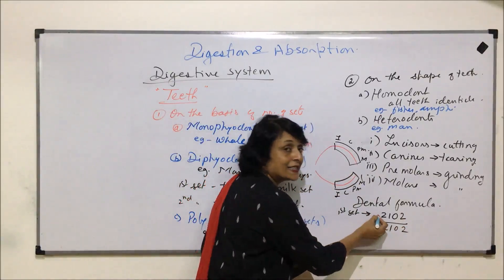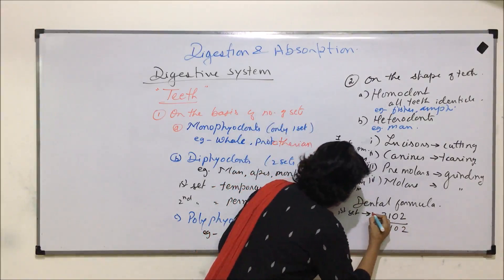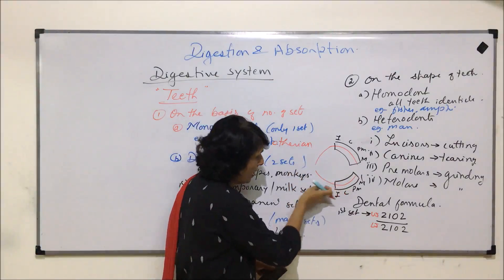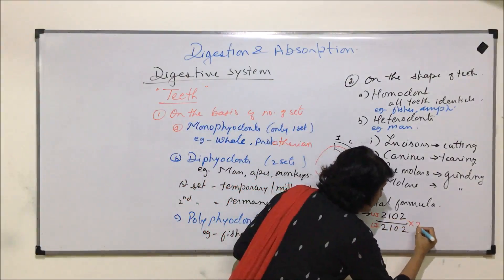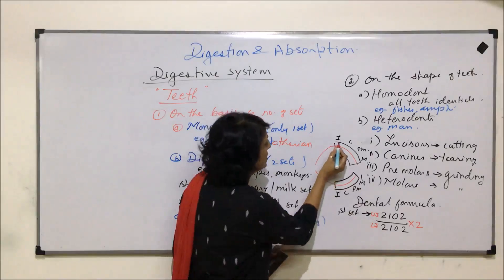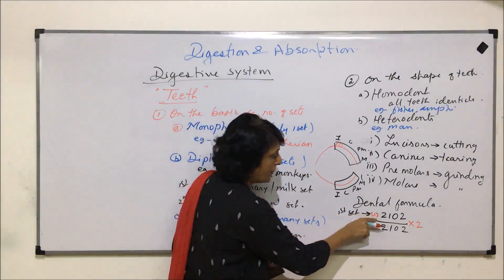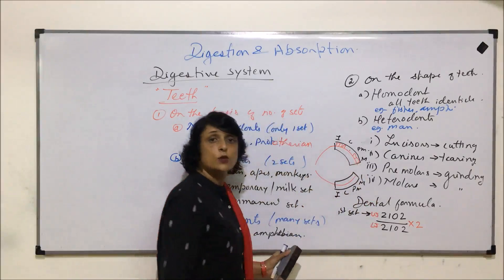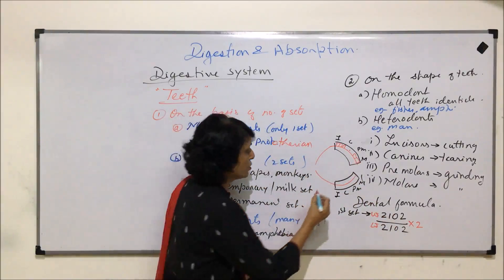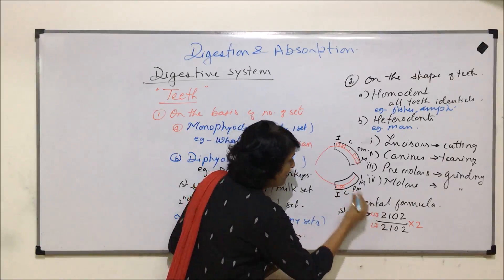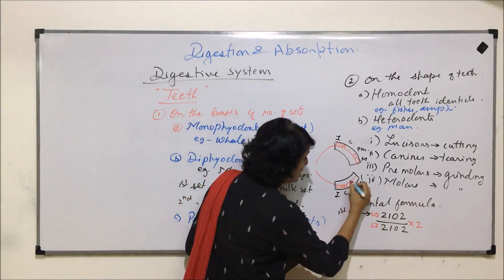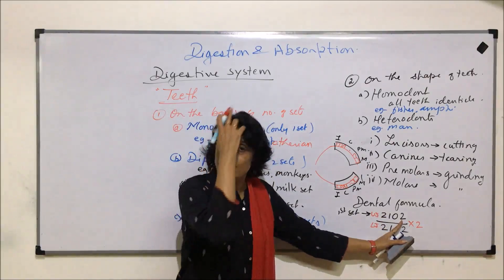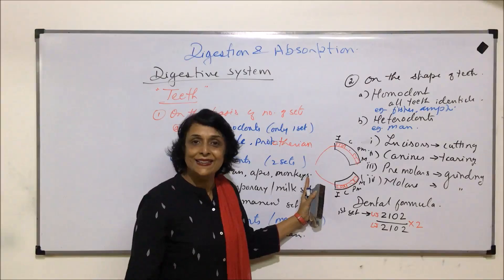The upper line represents the upper jaw and the lower line represents the lower jaw, and we write only half — the same arrangement is mirrored on the other side. So in the upper jaw: two incisors, one canine, no premolars, and two molars — that is 2 1 0 2. Similarly in the lower jaw: two incisors, one canine, no premolars, and two molars.